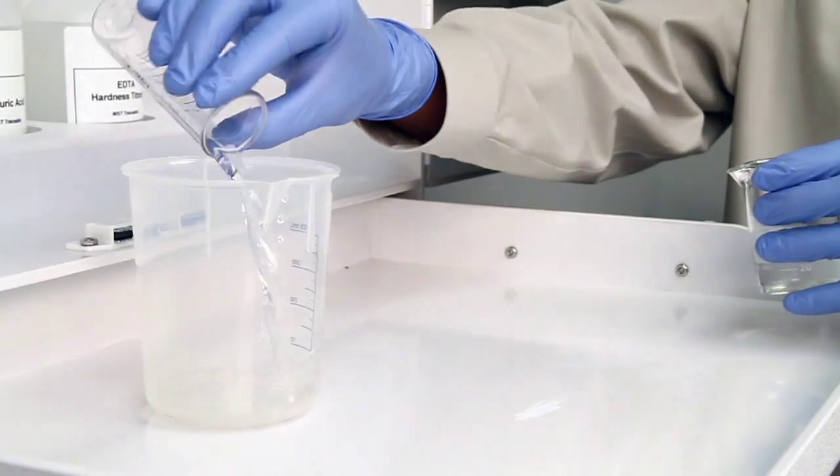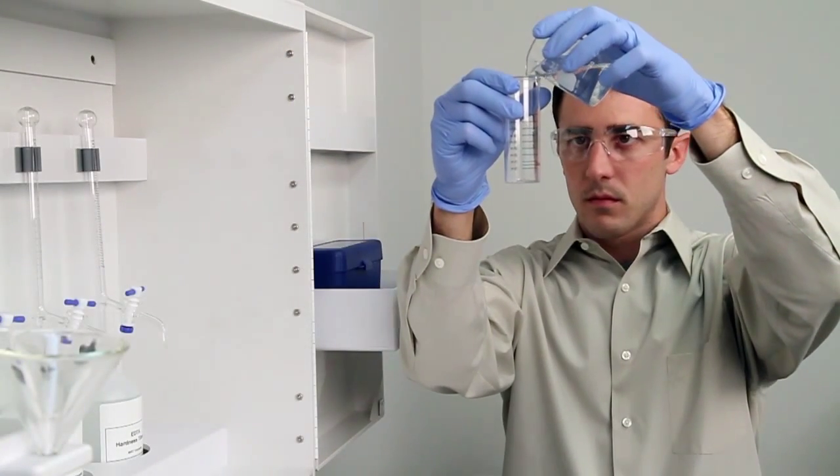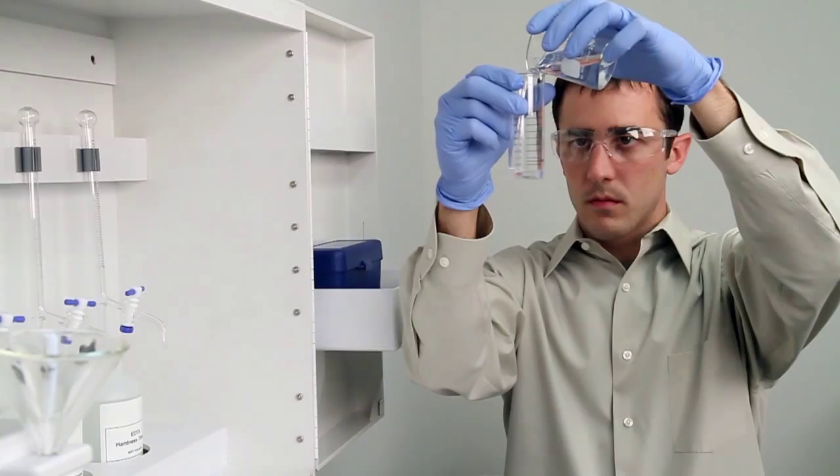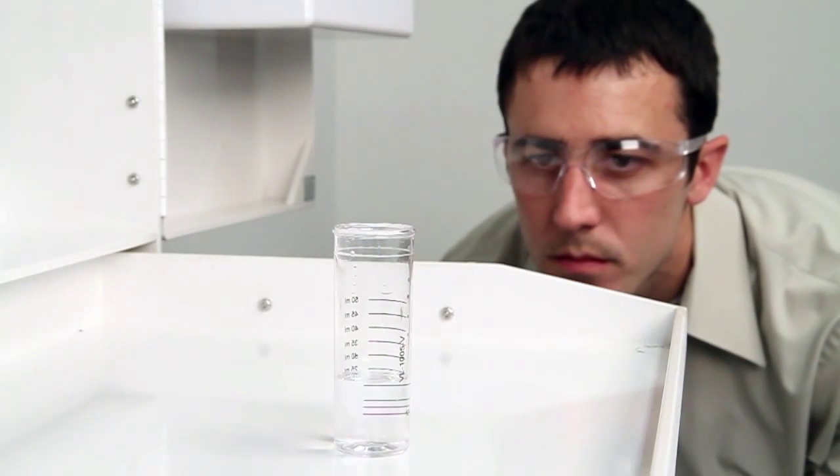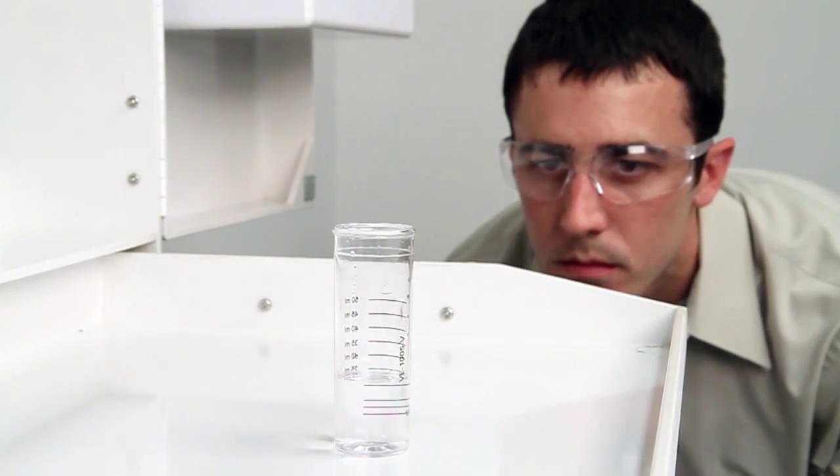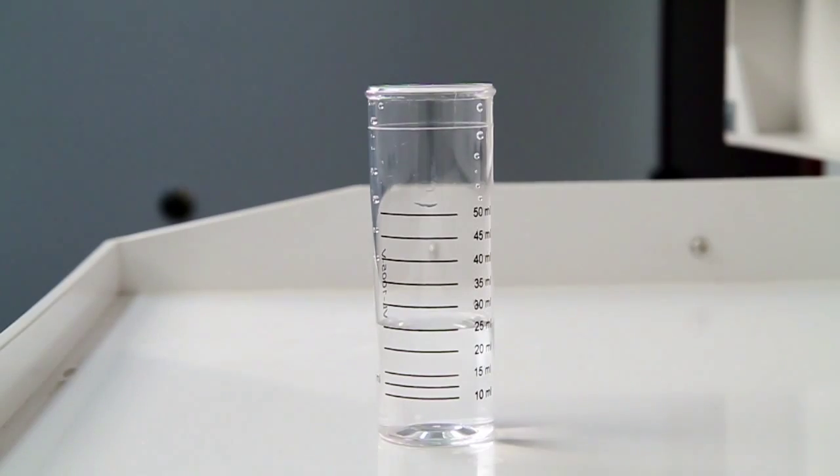Hold the vial close to eye level while pouring to ensure you have an accurate sample. Place the vial on a level surface and bend down to eye level to verify you have collected an accurate sample. The slightest change in sample size will lead to inaccurate results.